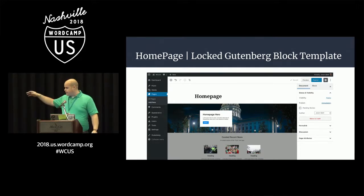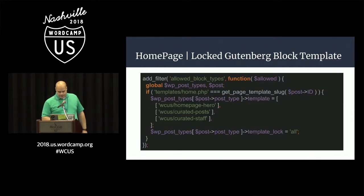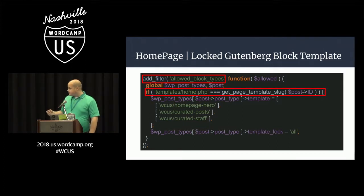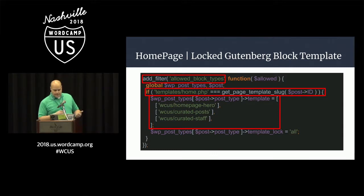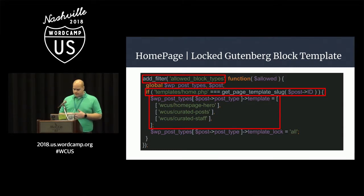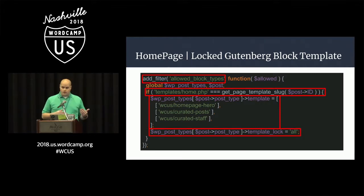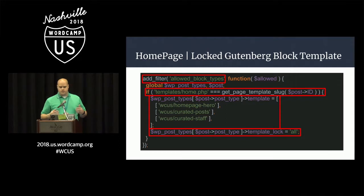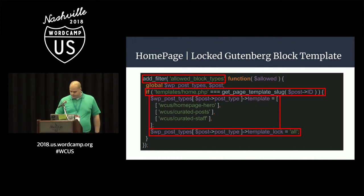This is an example of a WYSIWYG in Gutenberg — you can edit and it looks like what you're working on. Here's the code to do that. On the PHP side of your WordPress theme or plugin, you have a filter called allowed block types that tells Gutenberg what block types to allow on the given template. In our case, we filter so that if the template is home.php, only a few block types are allowed: homepage hero, curated post, curated staff. Then you set the property template lock all and Gutenberg will treat it as locked so the user can't drag and drop around. I know there's a lot of hesitation on Gutenberg — maybe people have too much control — so you can kind of take some of that away if you want to.